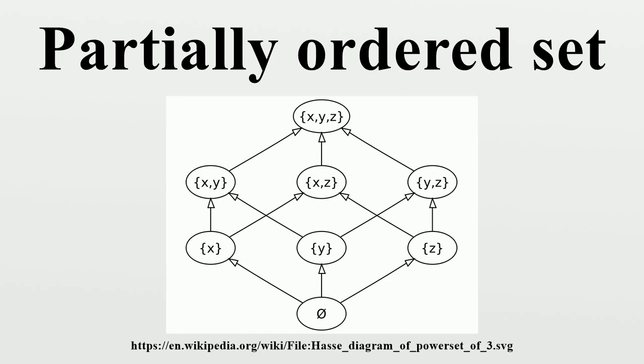For example, consider the positive integers ordered by divisibility. One is a least element, as it divides all other elements. On the other hand, this poset does not have a greatest element. This partially ordered set does not even have any maximal elements, since any G divides, for instance, 2G, which is distinct from it, so G is not maximal. If the number 1 is excluded while keeping divisibility as ordering on the elements greater than 1, then the resulting poset does not have a least element, but any prime number is a minimal element for it. In this poset, 60 is an upper bound of the subset {2, 3, 5, 10}, which does not have any lower bound. On the other hand, 2 is a lower bound of the subset of powers of 2, which does not have any upper bound.